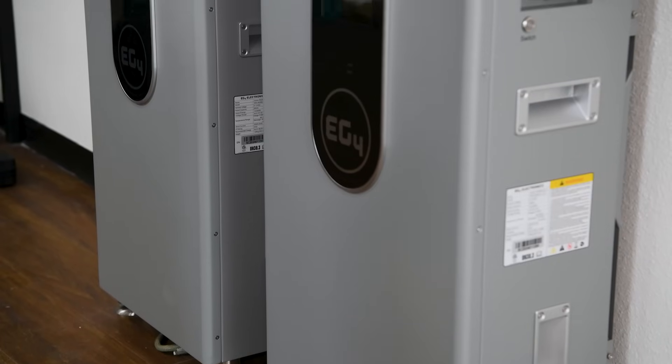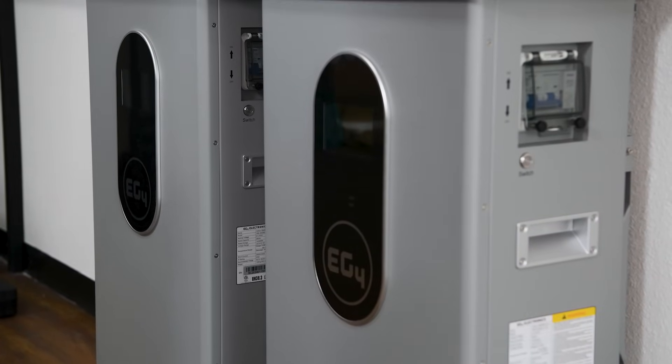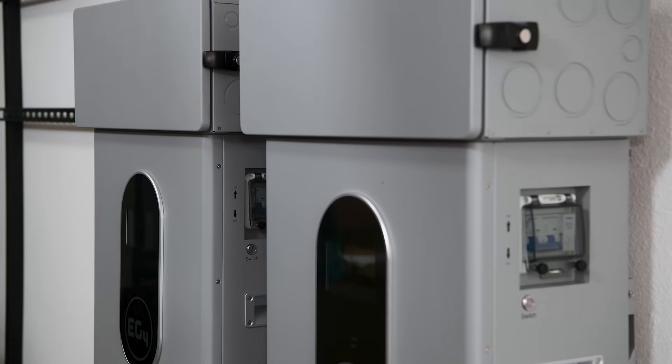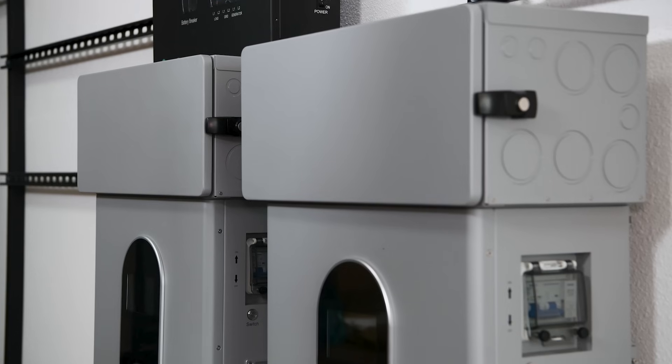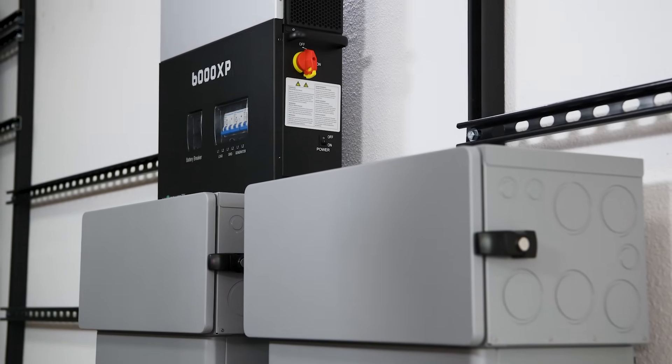Now, if you're looking to maximize the functionality of your system, the recommended setup includes one EG4 18K PV inverter paired with at least two wall mount units. This configuration ensures you get the most out of the system's capabilities, providing ample power and enhanced efficiency. This setup not only optimizes your energy storage, but also ensures you can handle higher energy demands smoothly, making it a powerful solution for your energy needs.